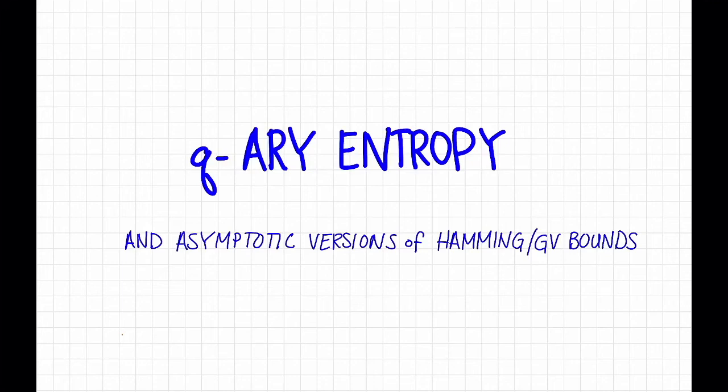Now that we have our asymptotic parameter regime, we can simplify the expressions for the Hamming and GV bounds. We'll also introduce the q-ary entropy, which is going to help us do that.